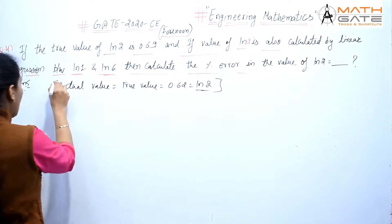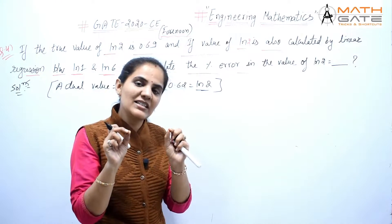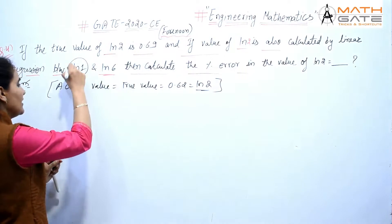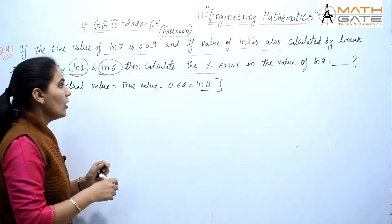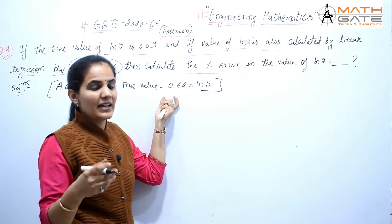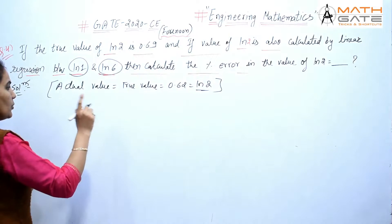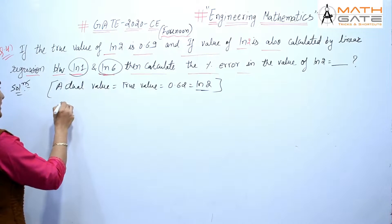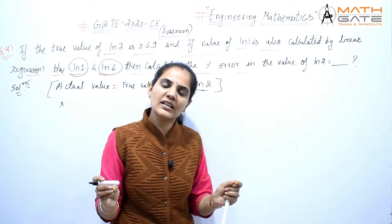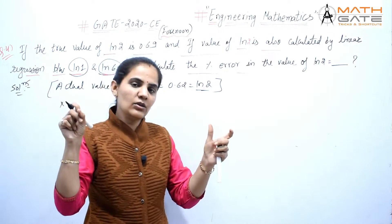Now we have to find the approximate value of ln2 using linear regression. Since it is linear regression, it means it is a simple line equation. The line equation is defined by two points — one starting point and one ending point.